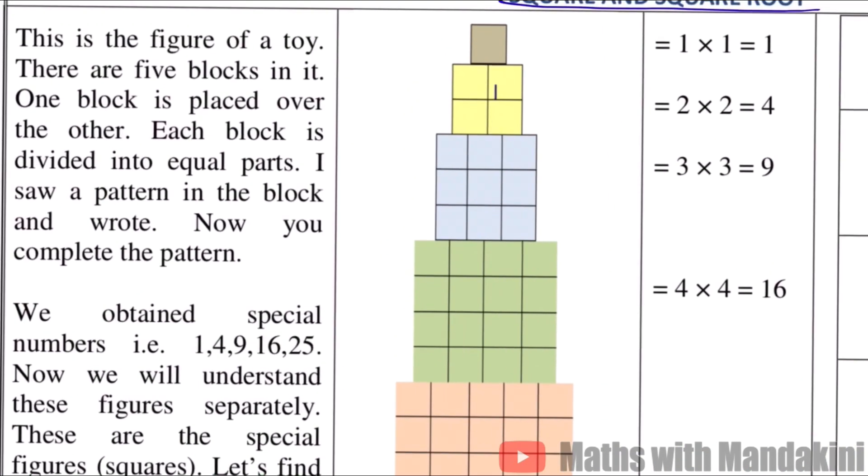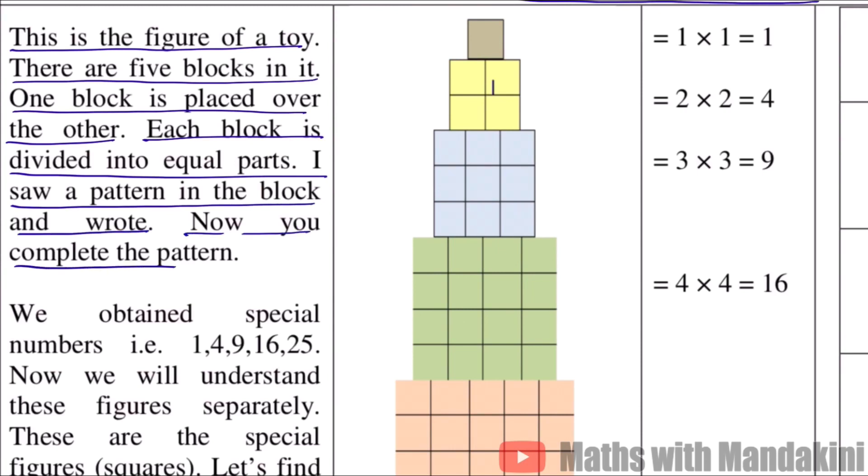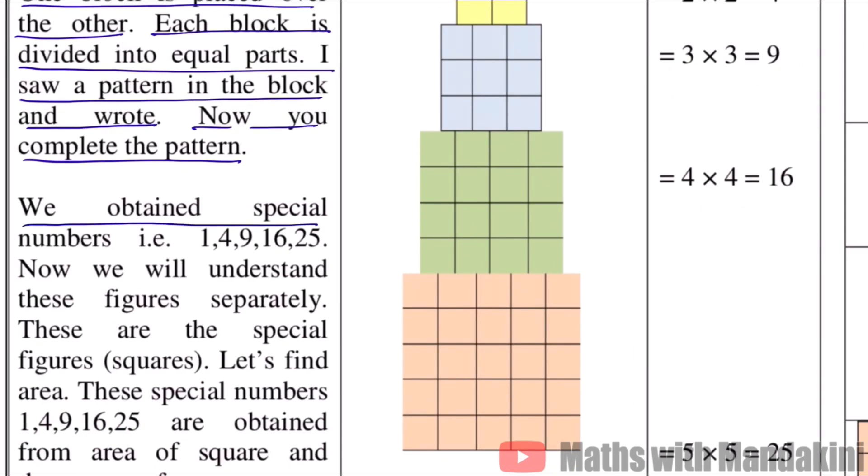This is the figure of a toy. There are five blocks in it. One block is placed over the other. Each block is divided into equal parts. I saw a pattern in the block and wrote. Now you complete the pattern. We obtained special numbers, that is 1, 4, 9, 16, 25. Now we will understand these figures separately.